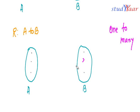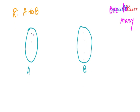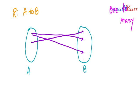Let us suppose I have a relation something like this. Let us assume I have one more element over here in B. This element is related to this element, and this element is also related to this element. Then this element is related to this element of B. Now this is called a one-to-many type of relation because I have many elements of B.